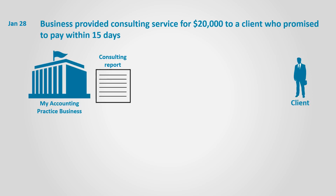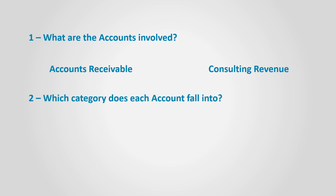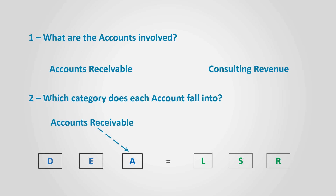On January 28th, the business provided consulting services to a client for $20,000, who promised to pay in 15 days. To analyze the transaction, we ask ourselves the usual five questions. What are the accounts involved? Since the business provided consulting services, revenue is recognized and the consulting revenue account is involved. The client didn't pay but owes money to the business — the business owns the right to receive money in the future, which is called accounts receivable — so the accounts receivable account is involved. Which category does each account fall into? Accounts receivable falls in the assets category, and consulting services falls in the revenue category.